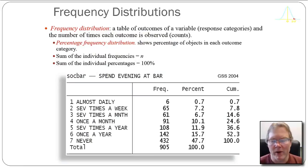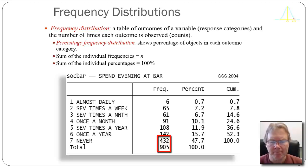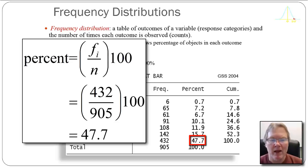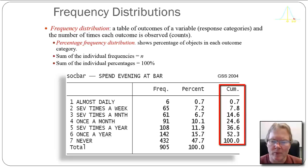In our frequency table itself, we can provide the frequencies in three different ways. One, we could just provide the simple counts. We can see that in 2004, out of 905 people who responded to this question, 432 responded that they never socialized at a bar or a tavern. We can convert those frequencies to percentages — taking 432, dividing by 905, and multiplying by 100 — finding that approximately 48% of the people sampled in 2004 never spend an evening at a bar or tavern. And then we can produce what's called the cumulative frequency distribution, which starts at the bottom and adds up all those individual percentages.